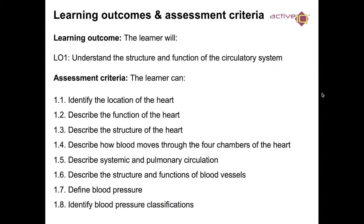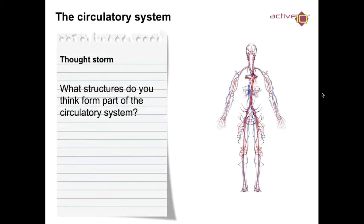Today our learning outcomes for this section are: identifying the location of the heart, describing the function of the heart, describing the structure of the heart, describing how blood moves through the four chambers of the heart, describing systemic and pulmonary circulation, describing the structure and functions of blood vessels, defining blood pressure, and identifying blood pressure classifications.